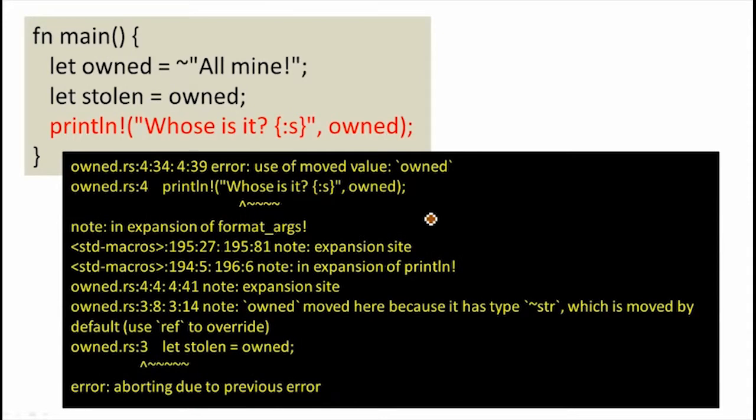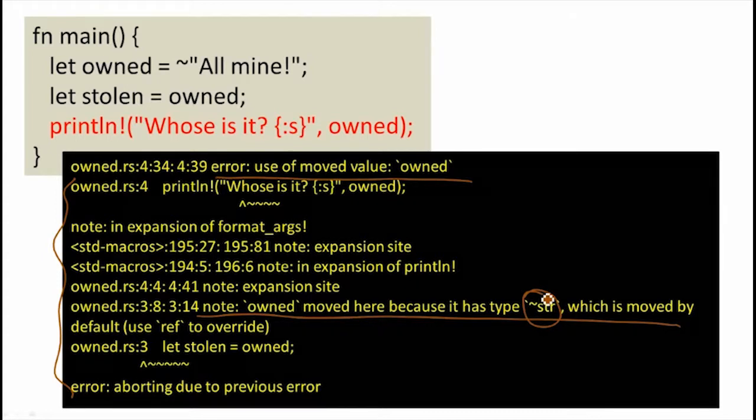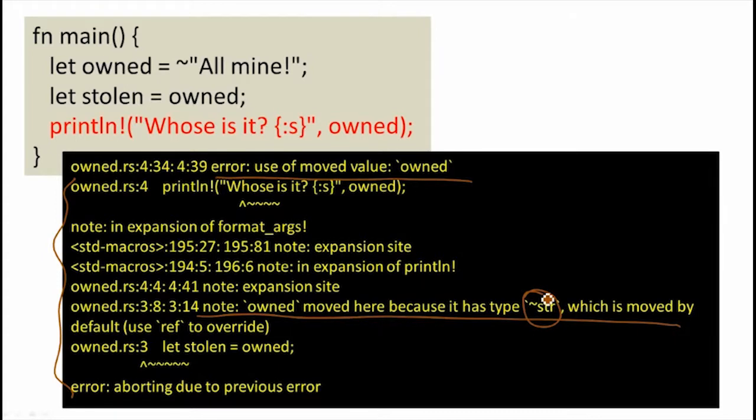They're necessary to provide this memory model, and the rule that happened here, once we moved owned to stolen, now we can't use owned anymore. So what we'll get from this code is an error from the compiler saying that we're using a value that's been moved. The wording is a little bit awkward, but there's lots of notes that can sometimes be intimidating because they're so long, but give you a lot more details about why the compiler is not allowing that code.